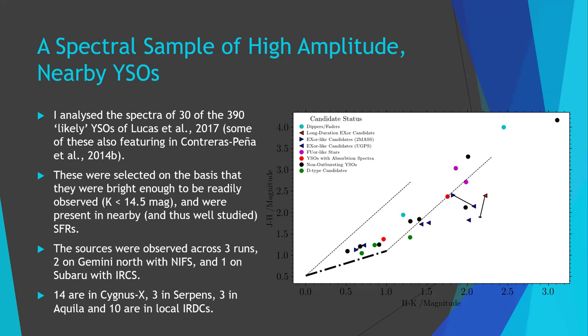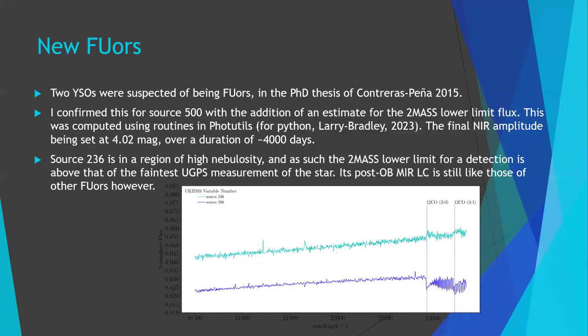Of these, 14 are in Cygnus, three in Serpens, three in Aquila, and ten others in nearby IRDCs. Key results: two new FUORs, which is nice. We need to get a research note out on these shortly, as I kept putting it off during my PhD. The spectra look FUOR-like; I added a search in 2MASS, which had no detections on either, to establish minimum detection limits and set amplitude limits, as well as collating mid-infrared light curves to see if they behaved like post-outburst FUORs. Good news — they are. The main takeaway: source 500 now has a minimum amplitude of 4 magnitudes in near-infrared and a duration for the rise of at least 4,000 days.